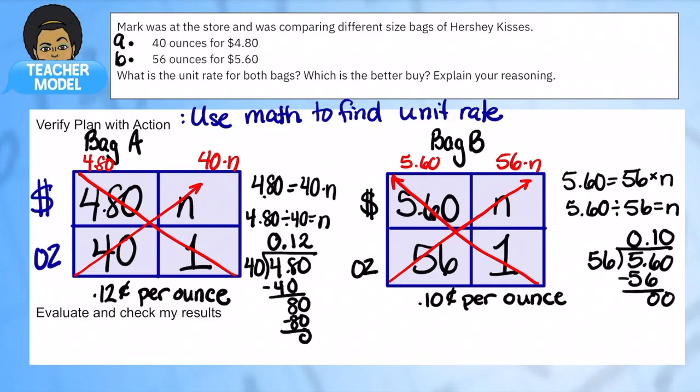Which would you rather pay? Which is the better buy? Which has the lowest price per ounce? It is absolutely going to be bag B. And why? Because I'm only paying 10 cents per ounce. You may be saying, aren't we paying more? We're paying $5.60, isn't that more than $4.80? Yes it is more, but I am getting more chocolate for less money. That is why it is a better buy.